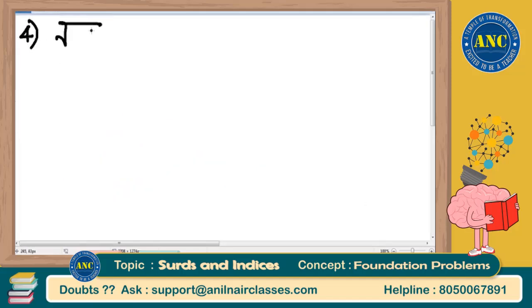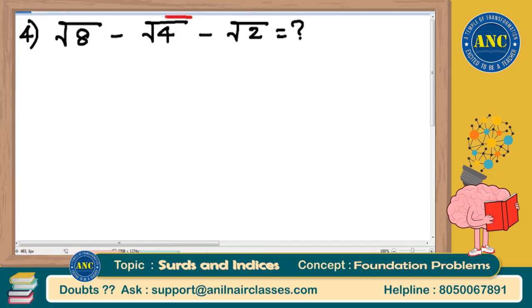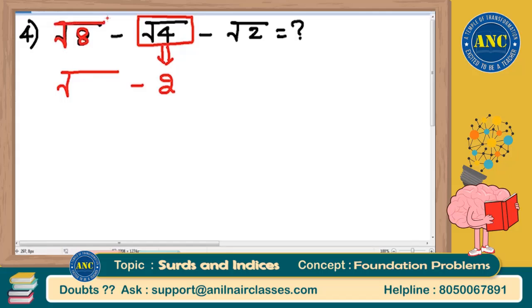Fourth question: square root of 8 minus square root of 4 minus square root of 2. The only term which gives a whole number is square root of 4, which is 2. For surds inside a square root, try to express the number inside as a perfect square; if it is a cube root, express the number inside as a perfect cube, and so on.